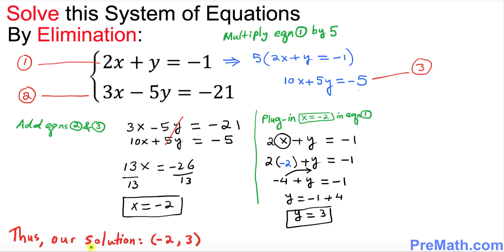Thus our solution turns out to be negative 2 comma 3 where negative 2 is our x value and 3 is our y value. Thanks for watching and please subscribe to my channel for more exciting videos.